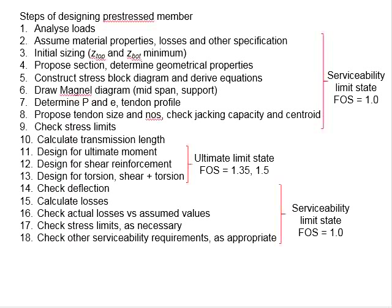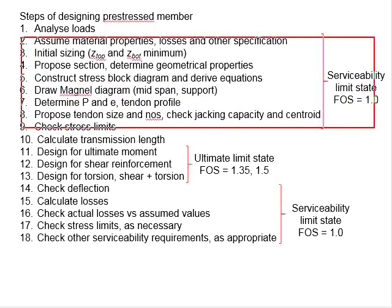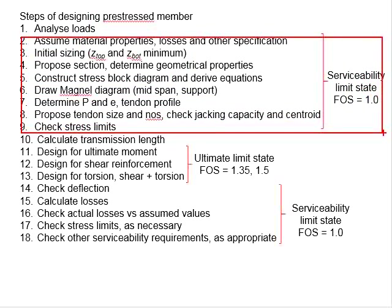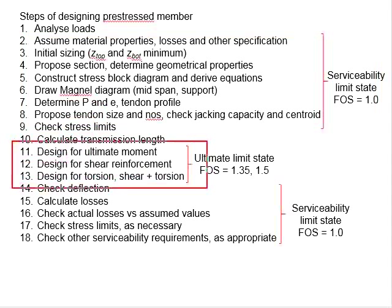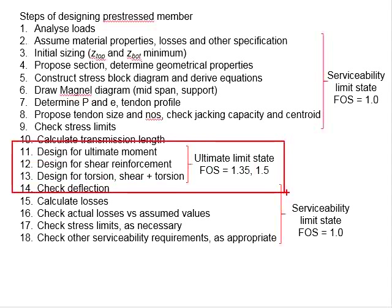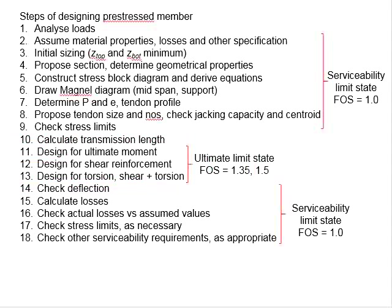In the previous chapter, we discussed the steps of designing the pre-stressed member. The calculation started with checking for the serviceability limit state, where the stress developed within the beam member needs to be within the allowable limits. The calculation step proceeds with the design for the ultimate limit state, which includes the design for the ultimate moment, shear reinforcement, and torsional resistance.